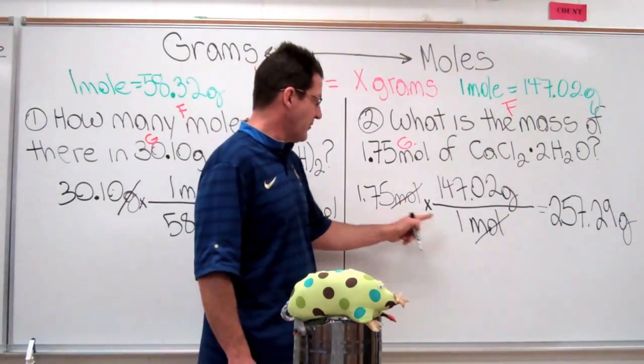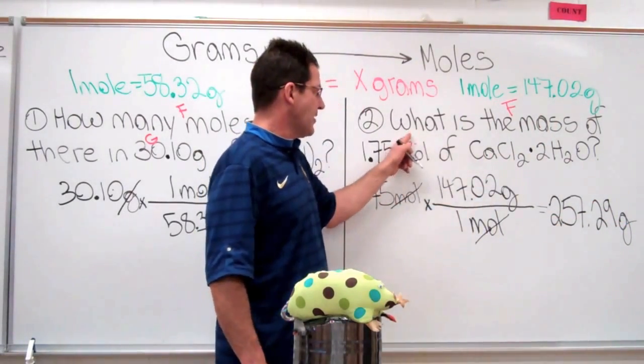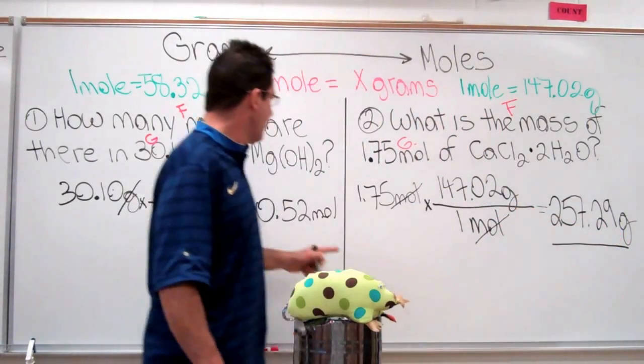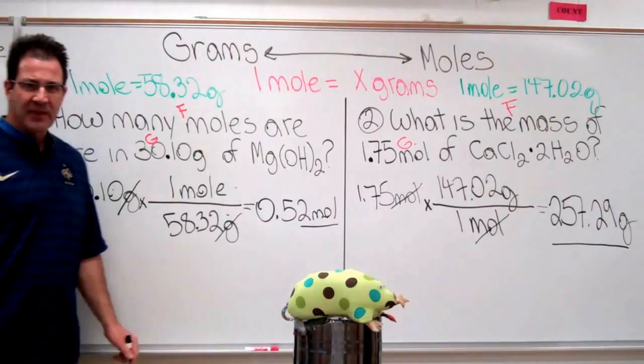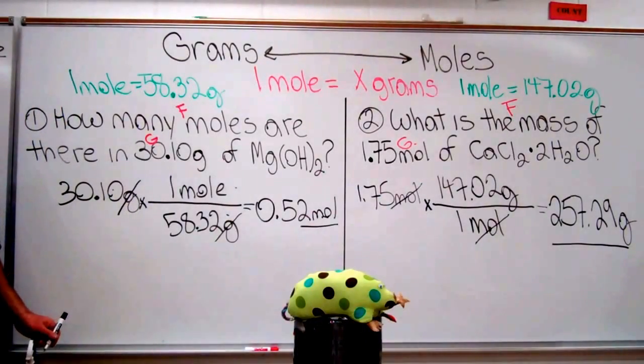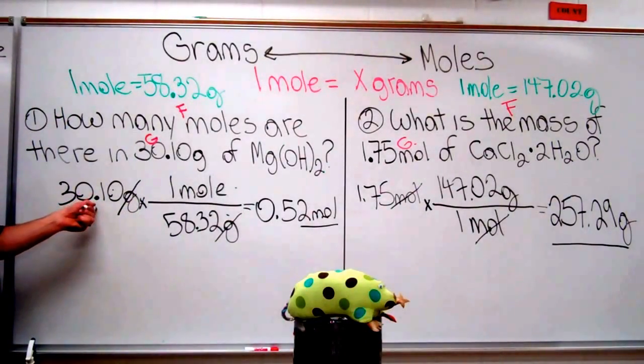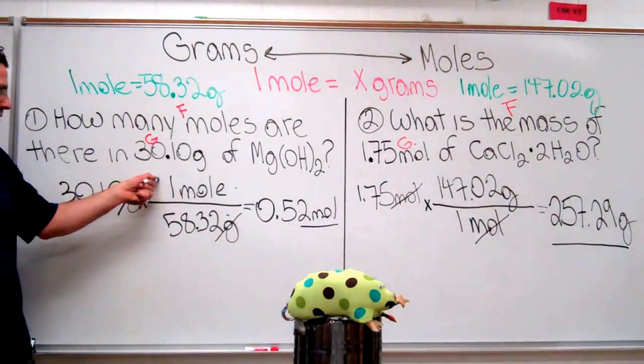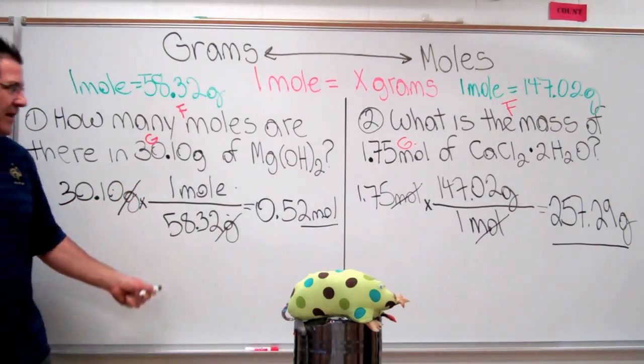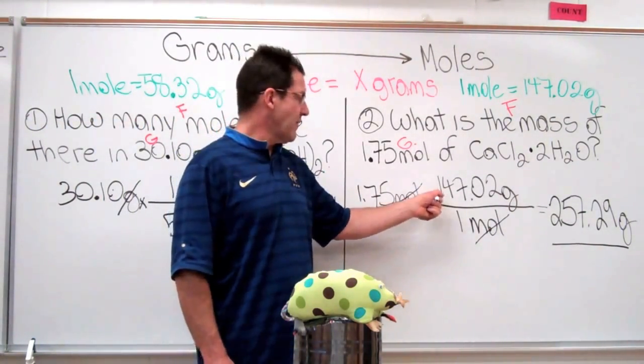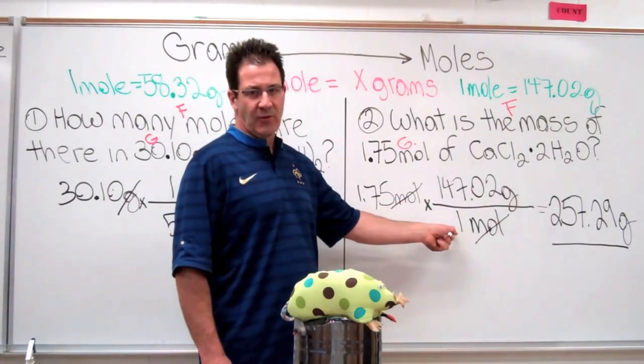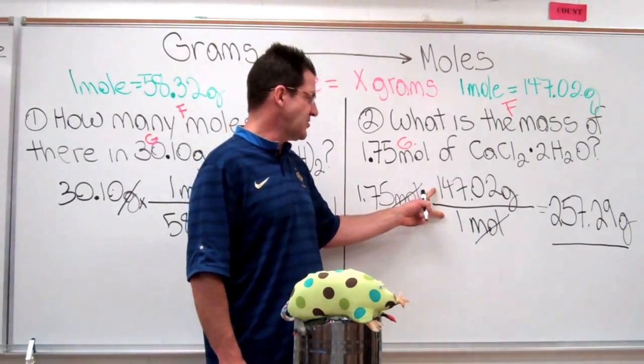You can see, once again, my moles cancel. I'm left with grams. I want to know what is the mass. That is my mass. In this problem, I wanted to know how many moles. That's my moles. Now, you should notice that in each case, you have your value over here that you're given. It's either going to be 1 mole divided by the molar mass, or in this case, because I'm given moles, it's the number of grams in 1 mole over 1 mole.